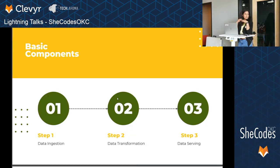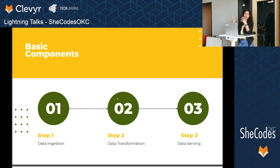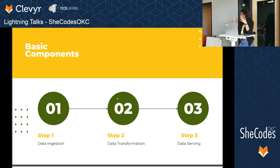If you talk about the different steps, the first one is data ingestion — discovering where the data is and bringing it all into one specific place. Then we do data transformation, where we apply the logic. It could be some sort of aggregation, filtering, or changing the data type, or it could be something more complex. And data serving is the last part, where we actually use the data that we cleaned up and made nice.